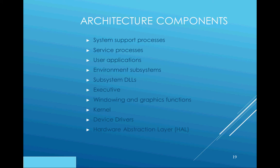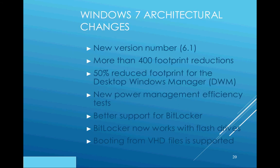There are changes in architecture in Windows 7. The version number, visible in the command prompt, is 6.1. It's lighter weight with more code reductions, more efficient, faster with desktop graphics, and offers better power management. It also supports BitLocker, a drive encryption technology that can now encrypt flash drives as well. You can also boot from a virtual hard drive in Windows 7.